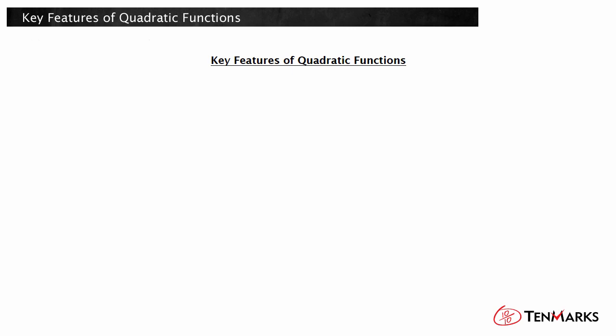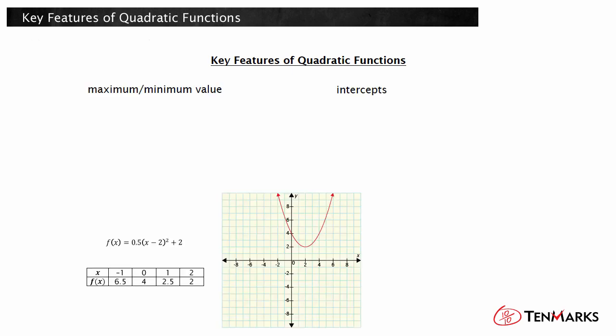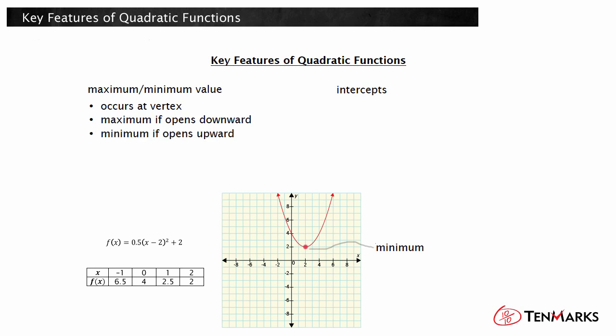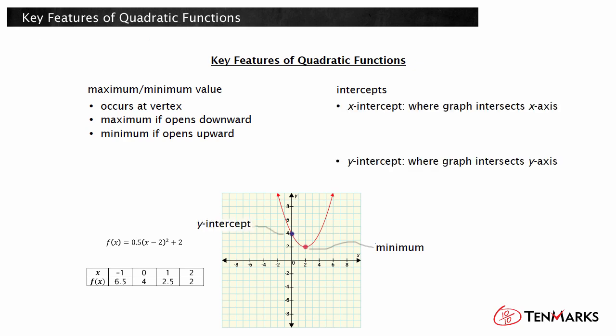Some of the key features to look at in a quadratic function are the function maximum or minimum, and the function intercepts. The graphs of quadratic functions are parabolic in shape. The maximum or minimum of a quadratic function occurs at the vertex of the parabola. When the parabola opens downward, it will have a maximum function value at the vertex. When the parabola opens upward, it will have a minimum function value at the vertex. X and Y intercepts are located where the graph intersects the X and Y axes.